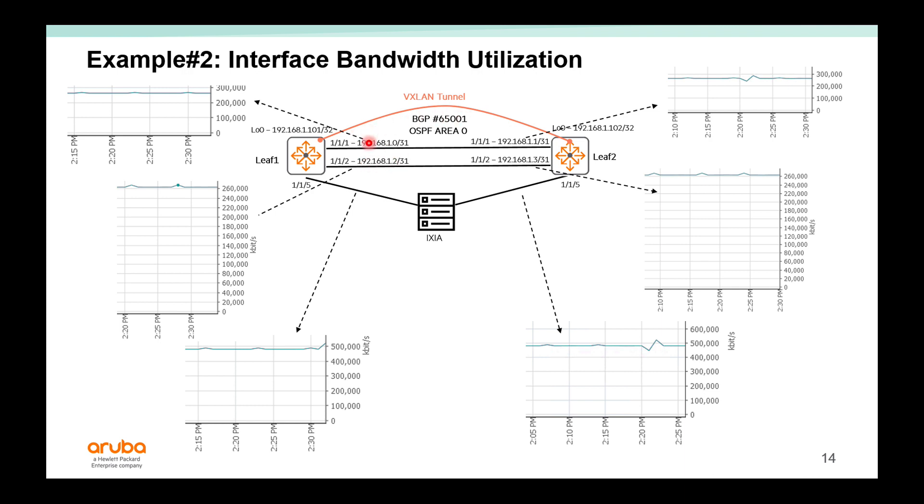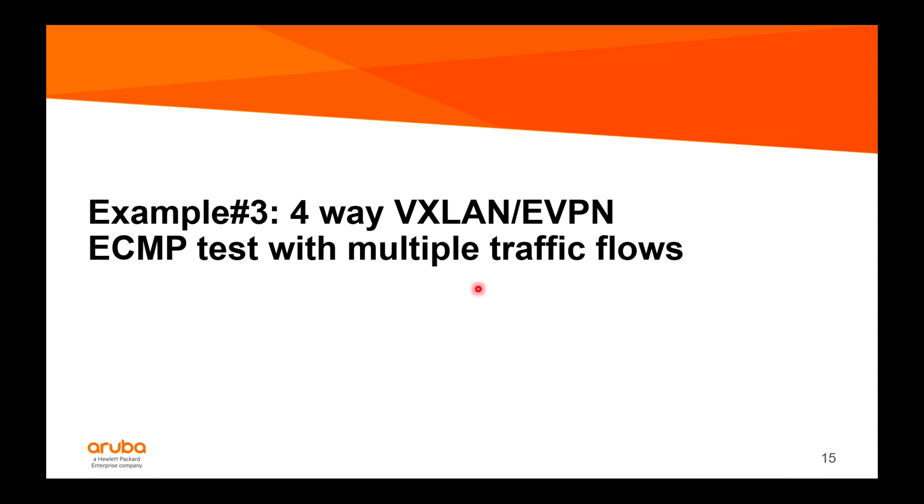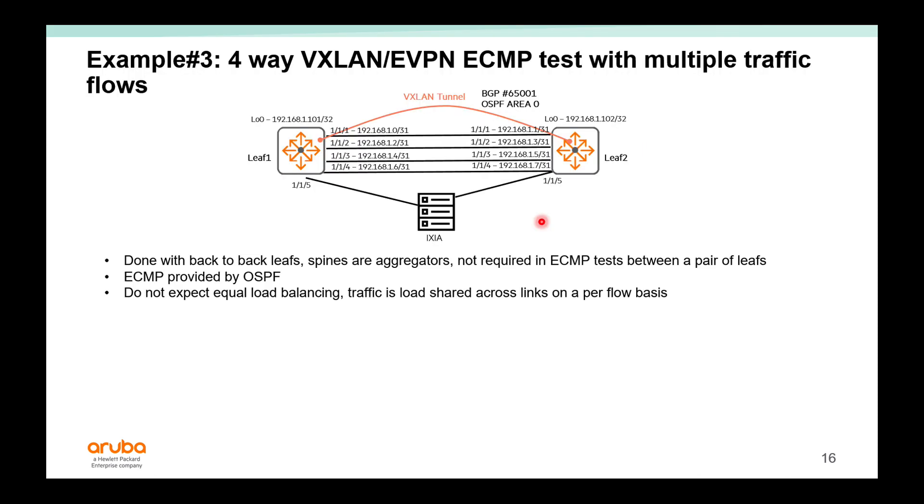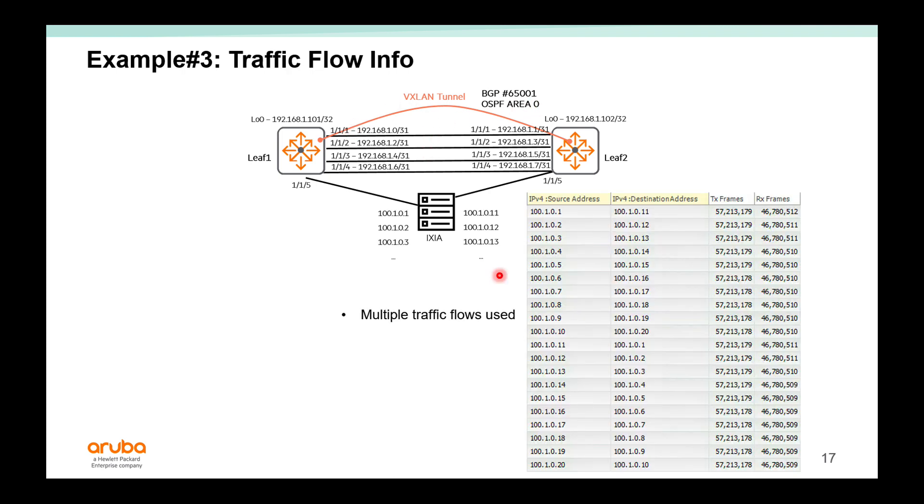Multiple streams over a single tunnel that uses both links. In example 3, we're going to use 4-way ECMP. So example 3 - we have four physical links instead of two on the previous examples. That's the only difference. We still have one tunnel across all four links. The same multiple traffic flows are used.